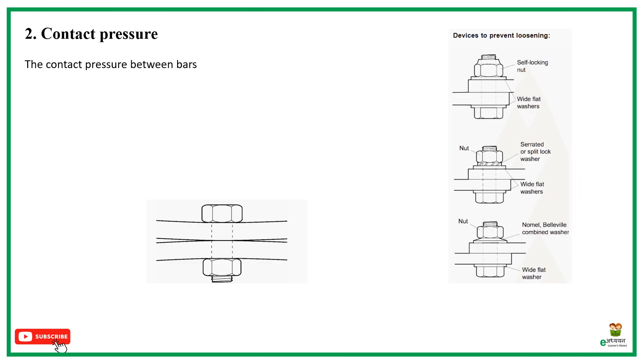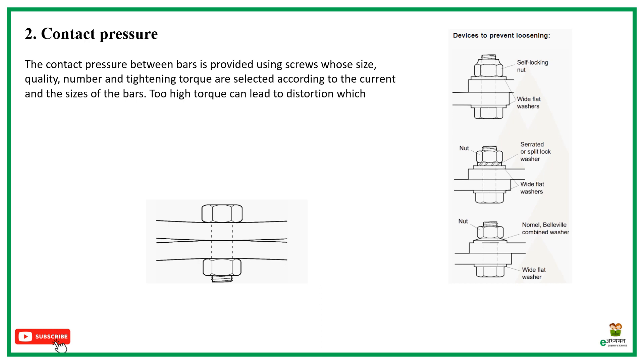Contact pressure. The contact pressure between bars is provided using screws whose size, quality, number, and tightening torque are selected according to the current and the sizes of the bars. Too high torque can lead to distortion which reduces the contact area. Applying mark will show any loosening and can also be used to check tightening.